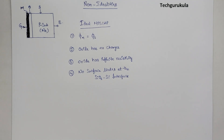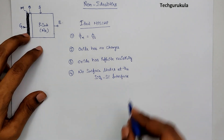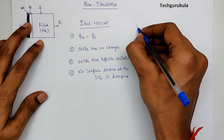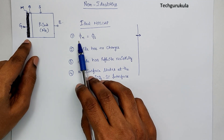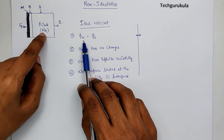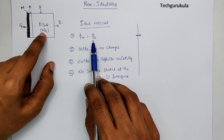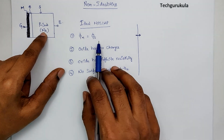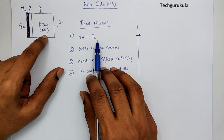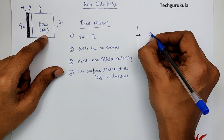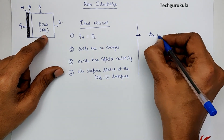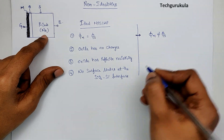Now let's go through each assumption and see whether it is satisfied in practice. For the first assumption: once the metal is decided, its work function is fixed. But as substrate doping changes, the work function of the semiconductor changes. These two are not going to be equal in almost all cases. So the first non-ideality is that φM will not equal φS.